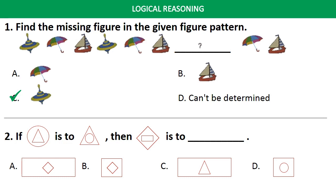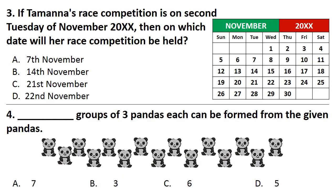For Question No. 2, look at the question carefully. If a triangle within a circle is to a circle within a triangle, then a rectangle within a diamond is to? Answer is Option A. That is a diamond within a rectangle.